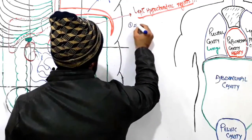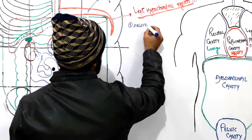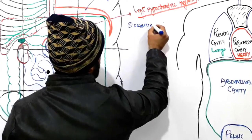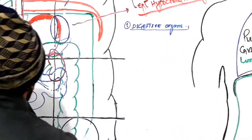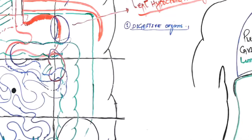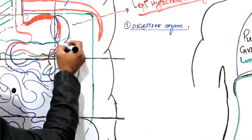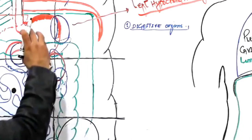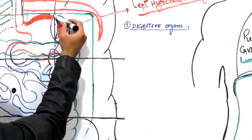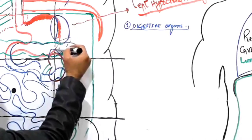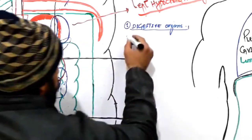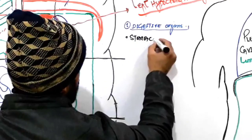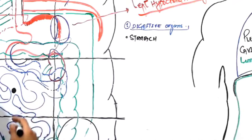The first class of organs in the left hypochondriac region is the digestive organs. The first important digestive organ found here is the stomach. As you can see, some parts of the stomach extend into the left hypochondriac region — much of the stomach is in the epigastric region, but some parts are also present in the left hypochondriac region. The stomach is responsible for digestion of food.